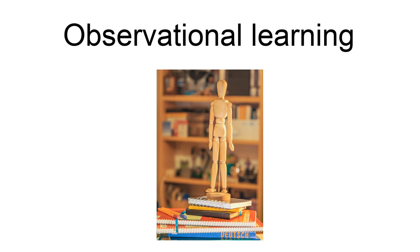Observational learning is learning that occurs through observing the behavior of others. It is a form of social learning which takes various forms, based on various processes. In humans, this form of learning seems to not need reinforcement to occur, but instead requires a social model such as a parent, sibling, friend, or teacher.